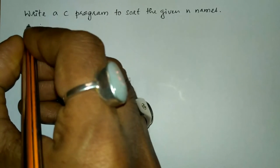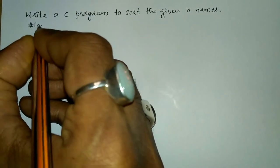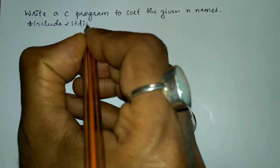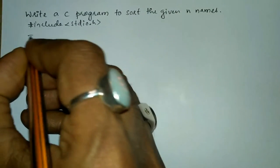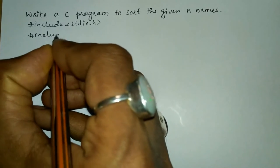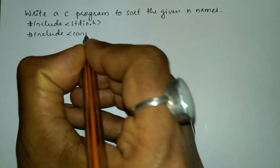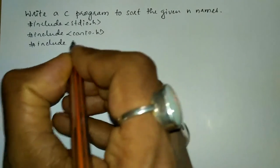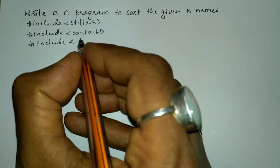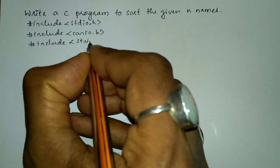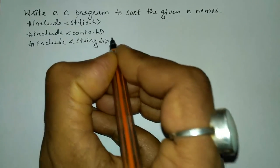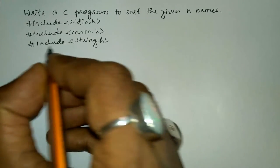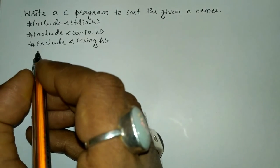Let us write the preprocessor directives: hash include standard input output dot h header file, hash include console input output dot h, and one more preprocessor directive string dot h, because we are going to use some of the built-in functions of string, so we have to include this header file.